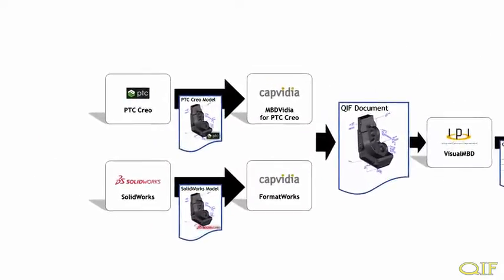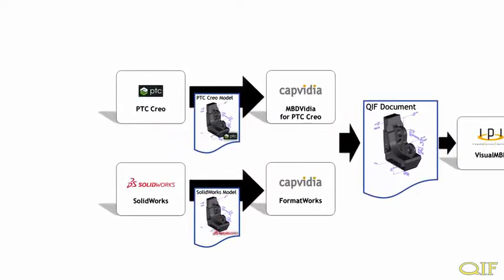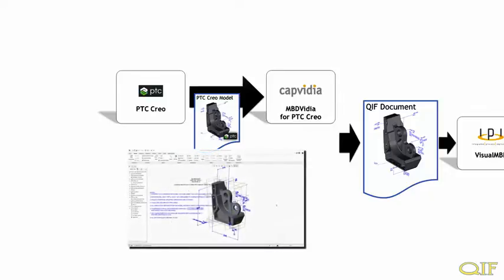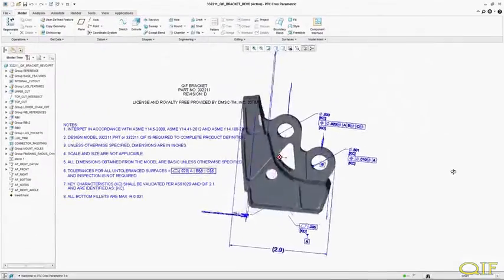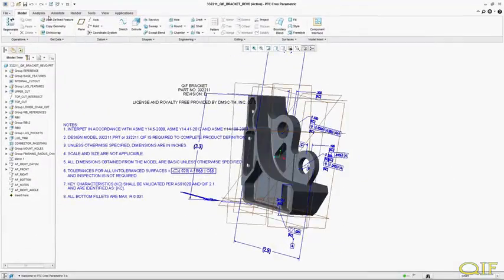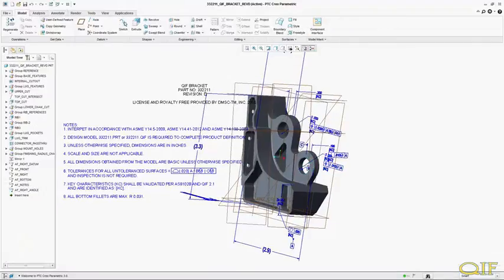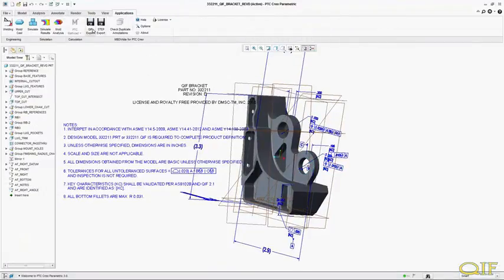Let's take a deeper look. In this demonstration, we'll start with a model with 3D PMI created in PTC Creo. The first step is to create a derivative QIF MBD model, which will contain all the tags necessary to maintain full associativity with the Authority Creo model. CapVidia's MBD video for Creo is a plugin that sits directly inside of Creo. It uses Creo APIs to query the model and PMI and build an exact duplicate of the model in the ANSI QIF format.